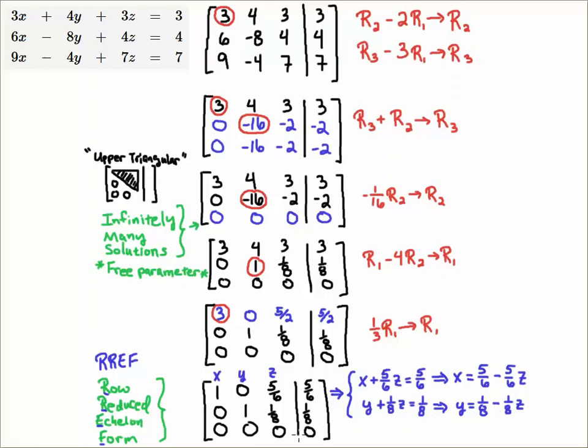Now notice that we had one row of zeros. Since we had one row of zeros, that indicates to me that we're going to have one free parameter. Sometimes you'll end up with two rows of zeros. You're going to end up with two free parameters and so on and so forth. In this case, we have one free parameter.